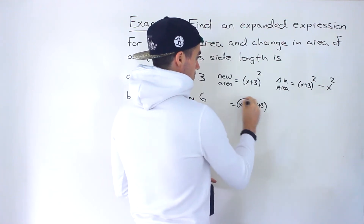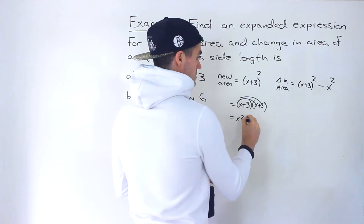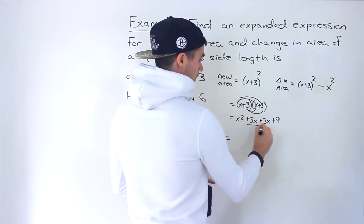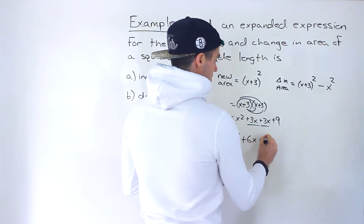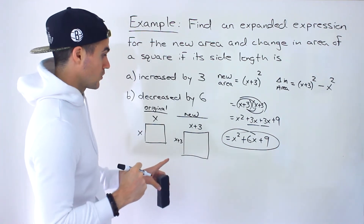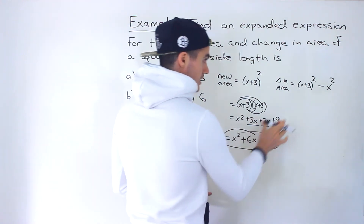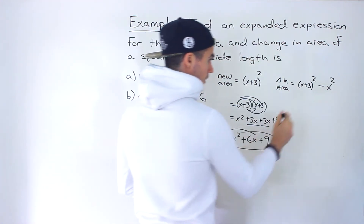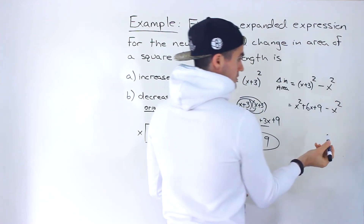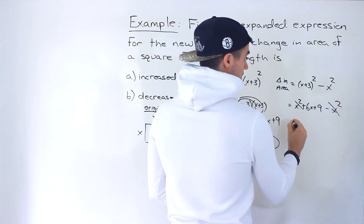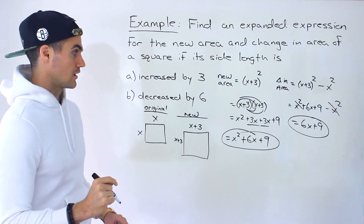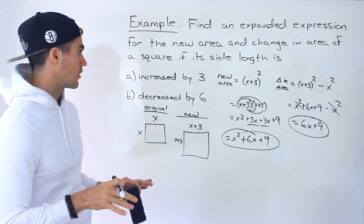So let's expand (x + 3)(x + 3): x times x is x squared, x times 3 is 3x, 3 times x is 3x, and then we get 9. Those like terms add up to 6x, giving us x squared plus 6x plus 9. That's the expression for the new area. The change in area is that result minus x squared — the x squareds cancel out, so we're left with 6x + 9.